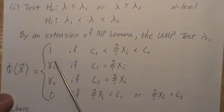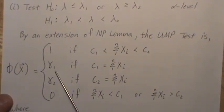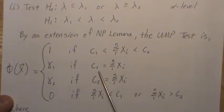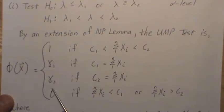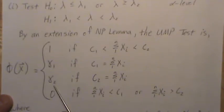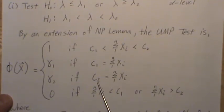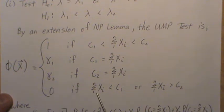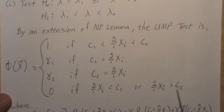If our test statistic is between two critical values C1 and C2, it takes on the value gamma 1 which means you reject the null hypothesis with probability gamma 1. If our test statistic equals C1, we reject the null with probability gamma 2 if our test statistic is equal to C2. And we do not reject the null hypothesis if our test statistic is strictly less than C1 or greater than C2.